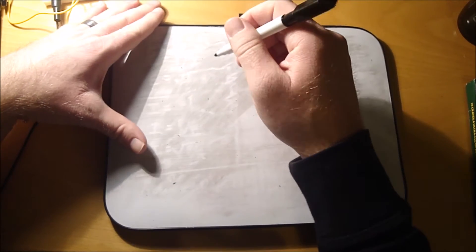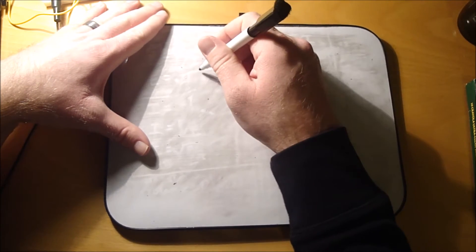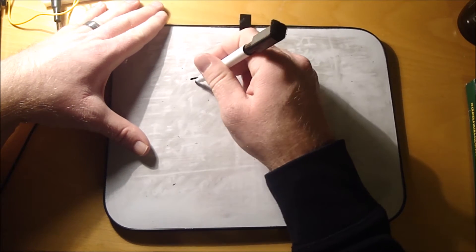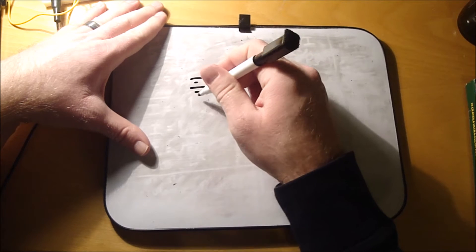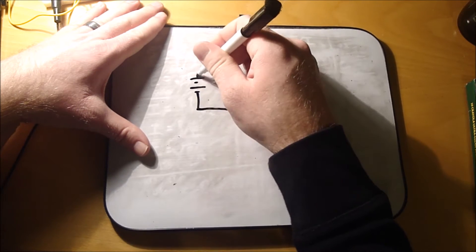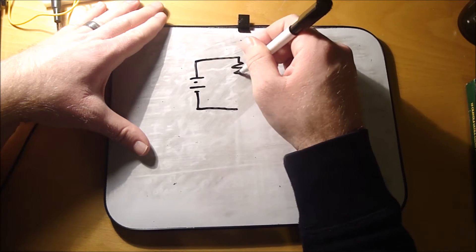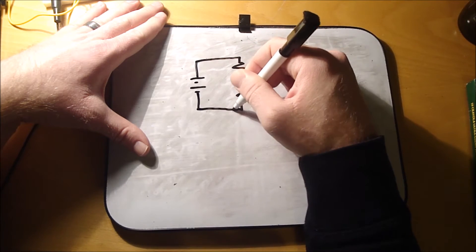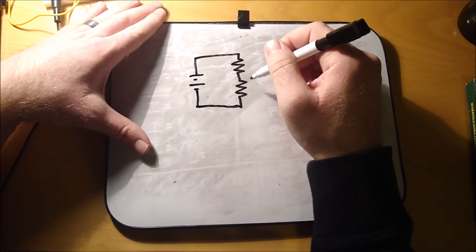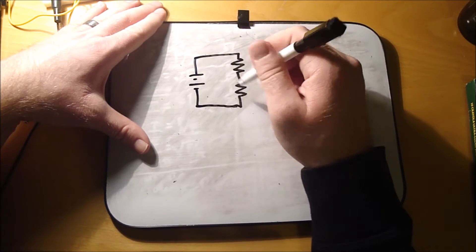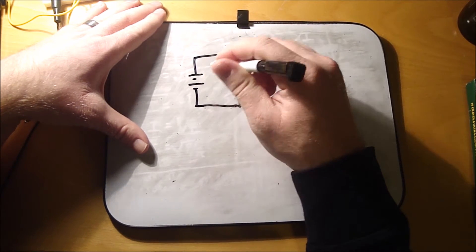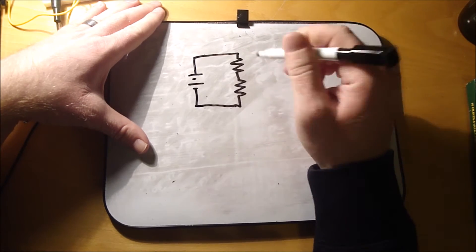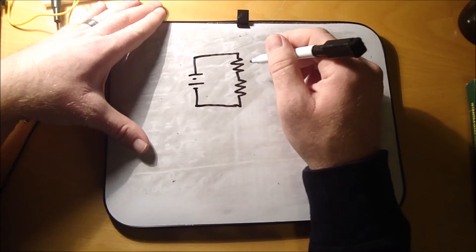So a series circuit would look like this. You got a battery and then two resistors. These two resistors would be in series with each other. So this entire circuit is a series circuit. Everything is in line, in series with one another.